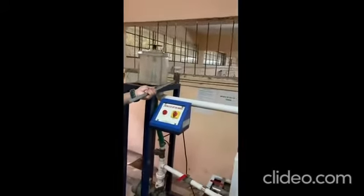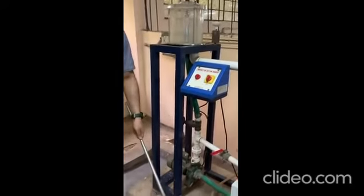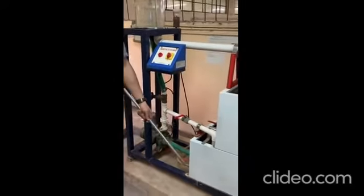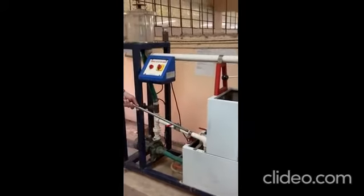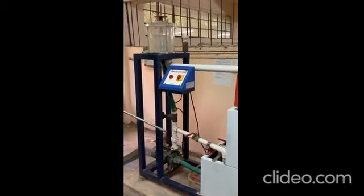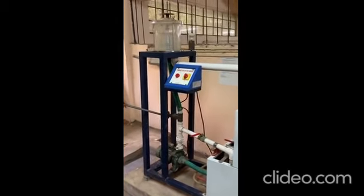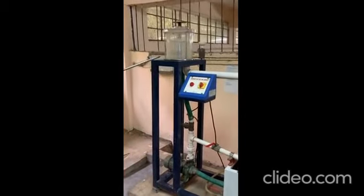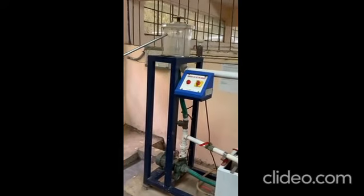This is the rod with a disk where we can put different weights. You can see different weights are here. The test continues from here. Initially we have to fill the water in the sump tank, then water is allowed to pass through this pipe, controlling this valve and regulating the speed of water. The water is allowed to pass through this nozzle and it will give an impact on this vane.